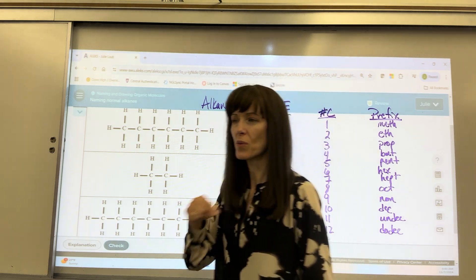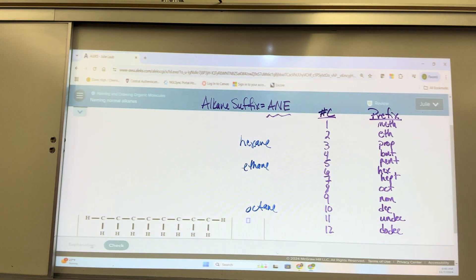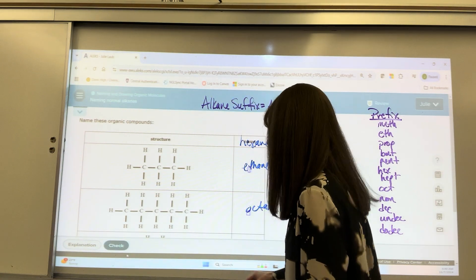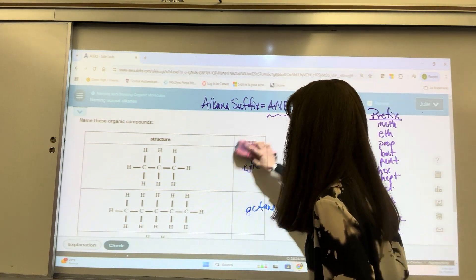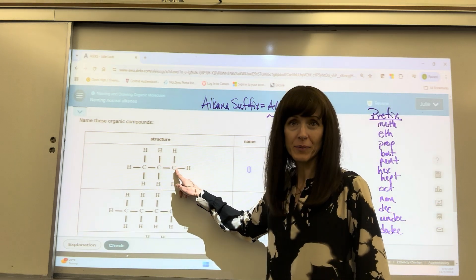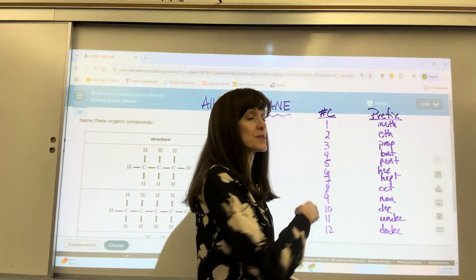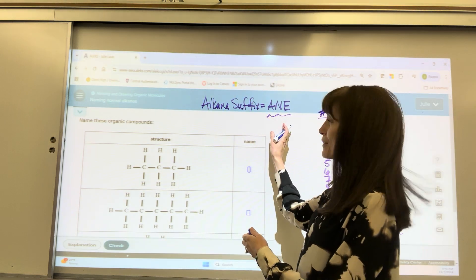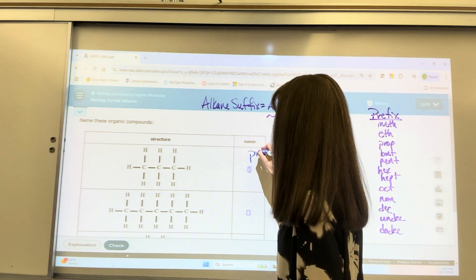Let's go through one more set, one more series. Let's see what we get. Okay. We have 1, 2, 3 carbons. The prefix for that is prop. For the suffix, put it together, propane.